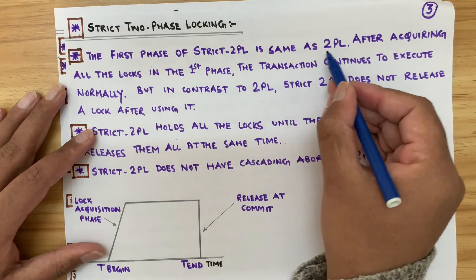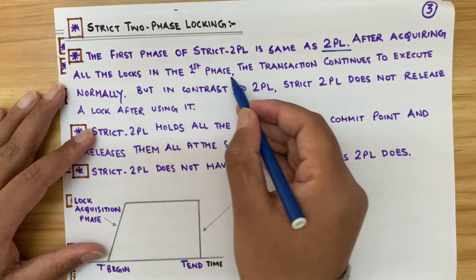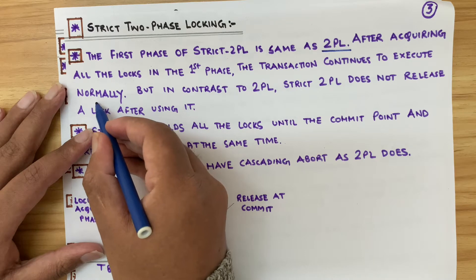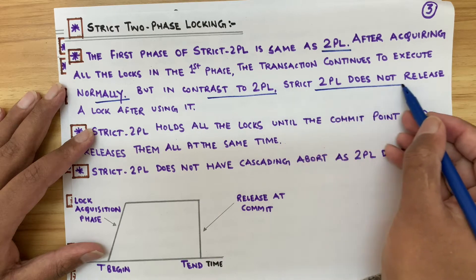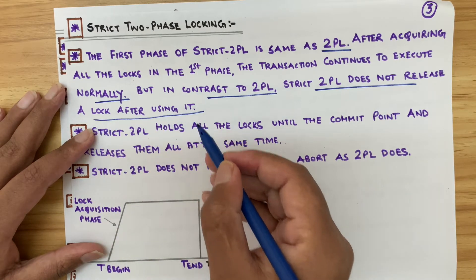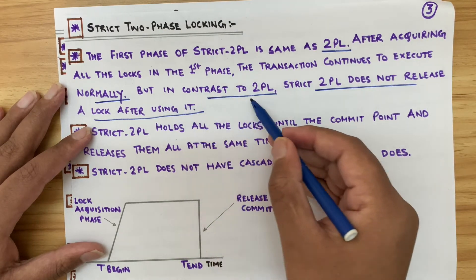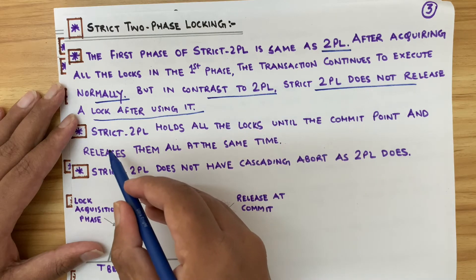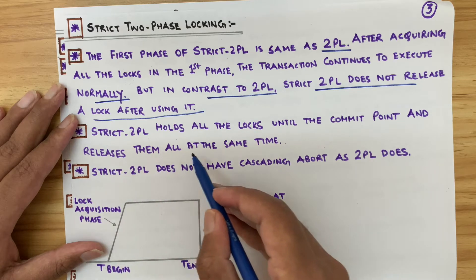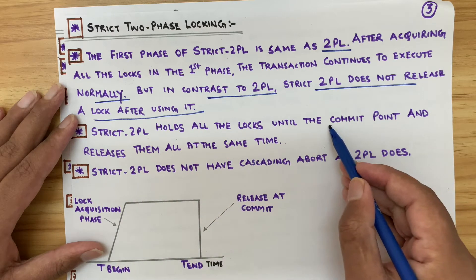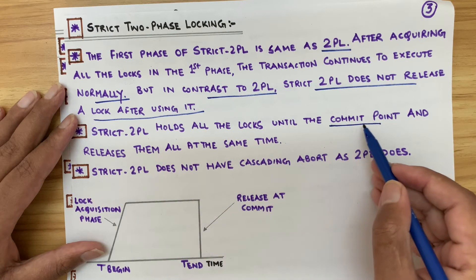Strict two-phase locking: the first phase is the same as two-phase locking — it acquires all the locks in the first phase and the transaction continues normally. But in contrast to two-phase locking, strict two-phase locking does not release a lock after using it. Strict two-phase locking holds all the locks until the commit point and releases them all at the same time — until the result is committed, the locks are not released, and they are all released after the commit operation is performed.